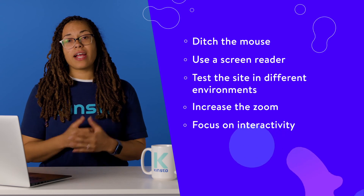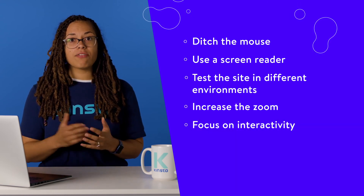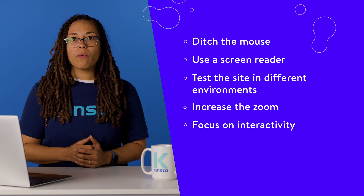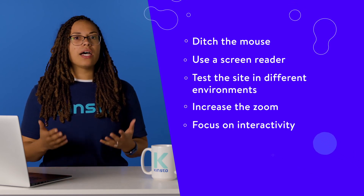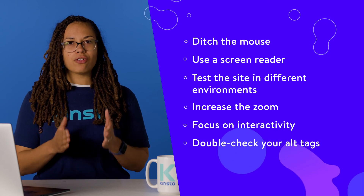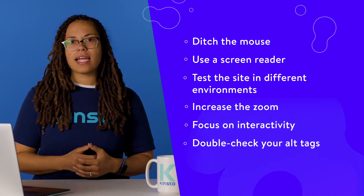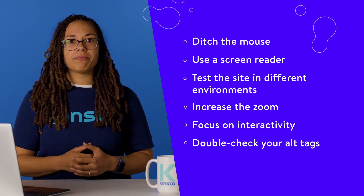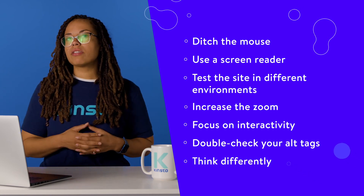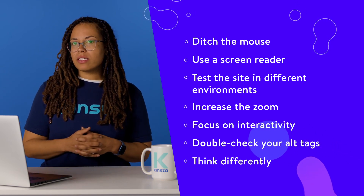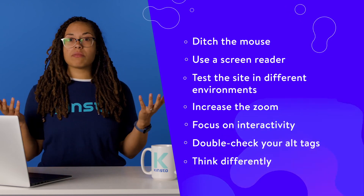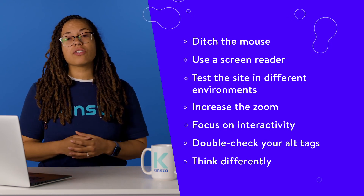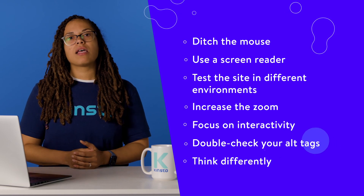Focus on interactivity — make sure to spend plenty of time testing interactive elements like videos, forms, and buttons. Links and form fields should always be brought into focus with an outline, underline, or special cursor. Double check your alternative tags — if you're unsure whether an image has an attached alternative text, use the inspect element tool to confirm. Think differently: if all the images on your site disappeared, would someone still be able to use it? If all the colors suddenly turned black and white, how would that affect usability? Make sure that the essential parts of your site still work if the decorative elements are somehow affected.